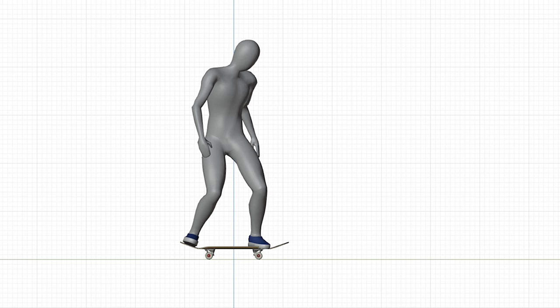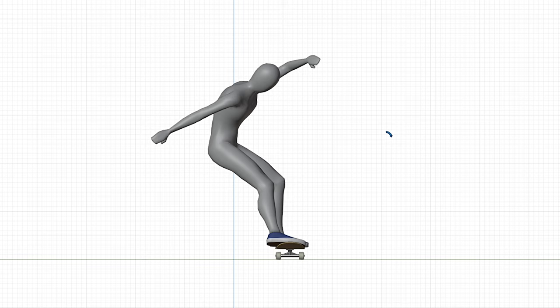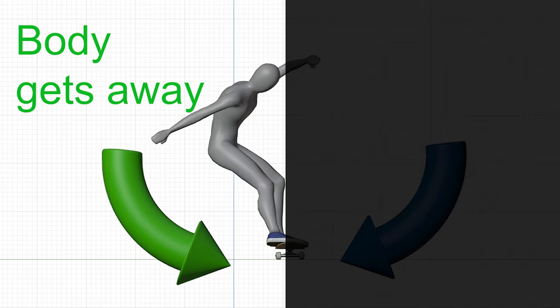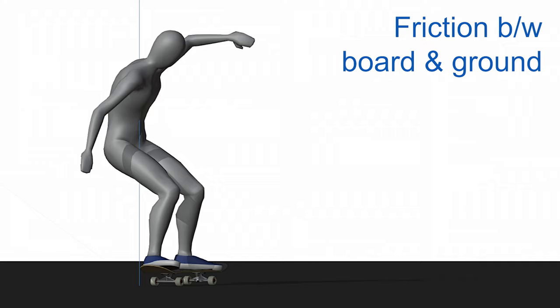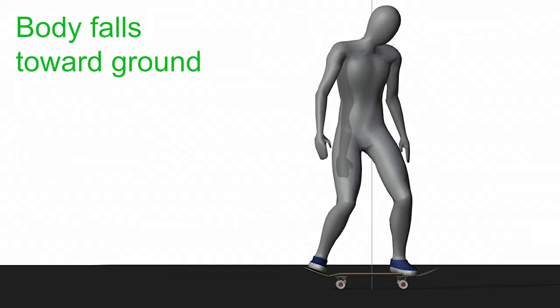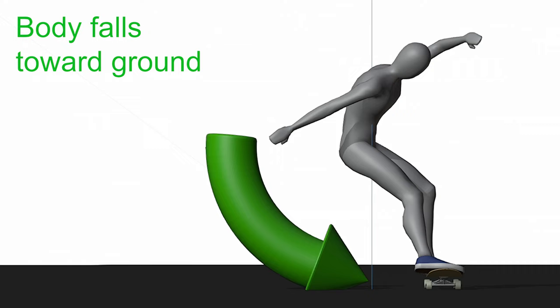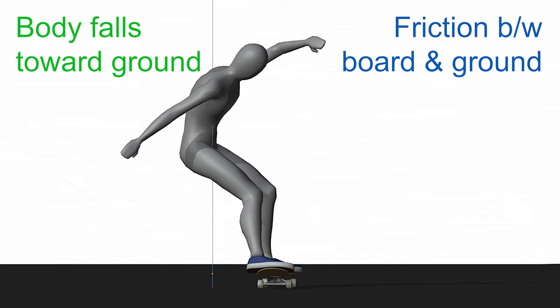You must hit the right balance between your board getting closer to you and your body getting farther away from your board. Let's break down the physics. When you power slide, you have to take into account two factors. Number one, the friction between your board and the ground that stops your board's movement. And number two, the energy of your body tries to fall toward the ground, which potentially could send your board farther forward. These two forces have to balance perfectly.